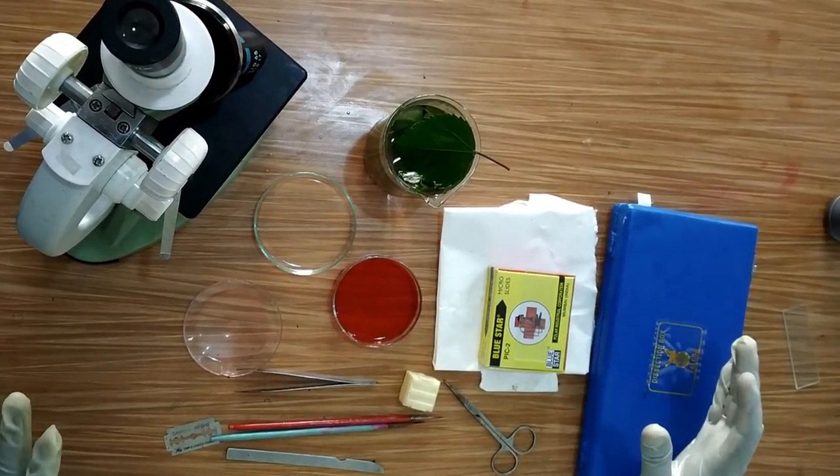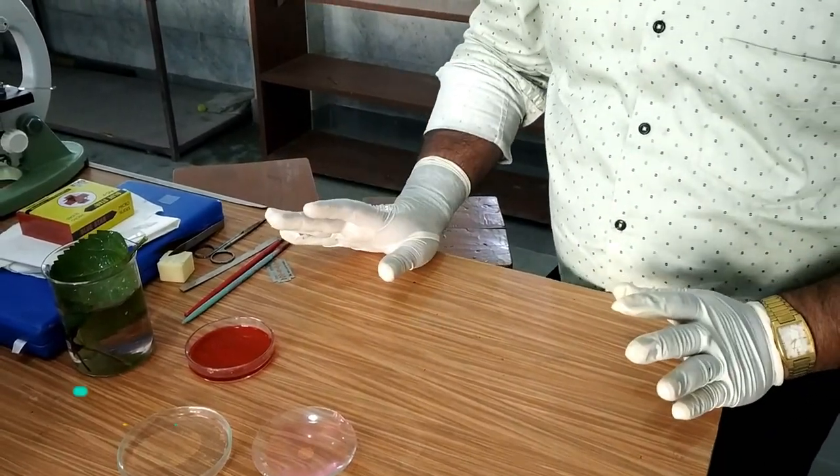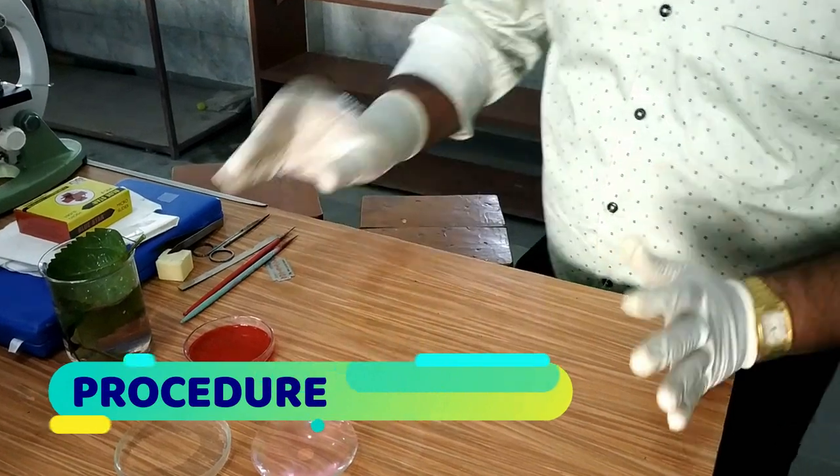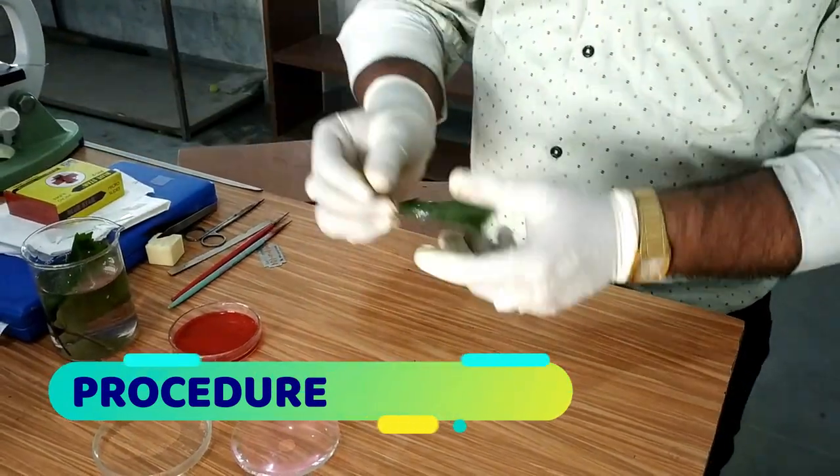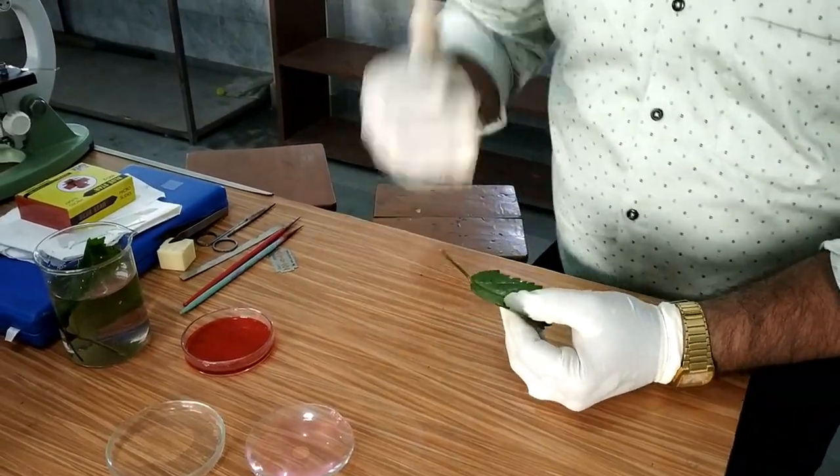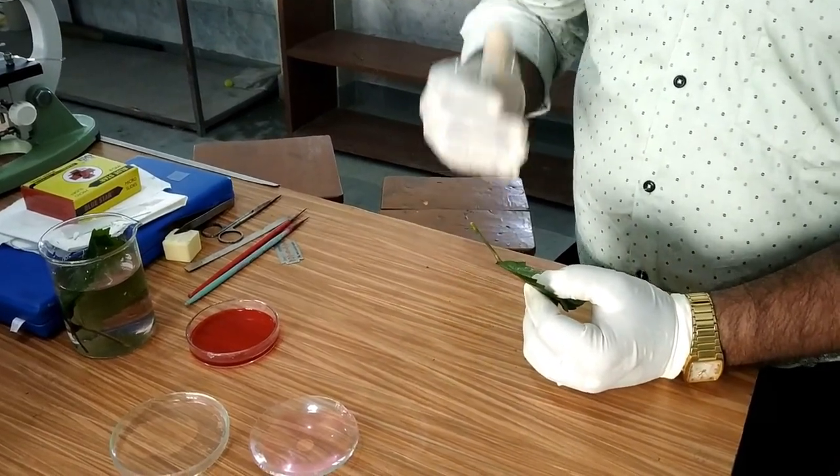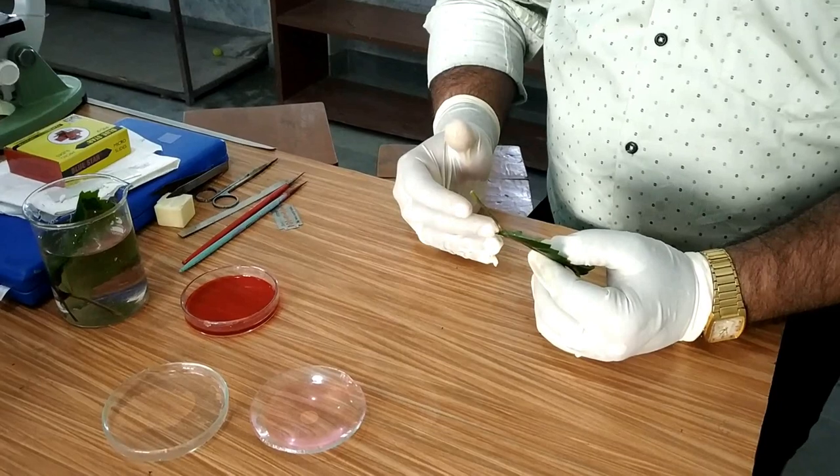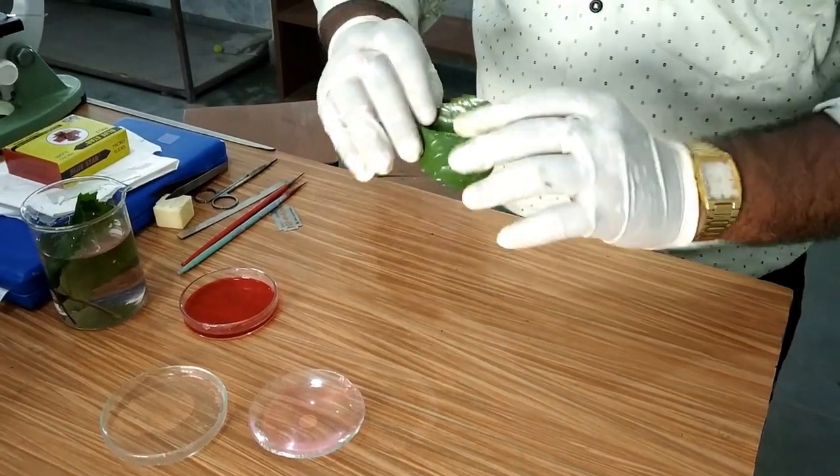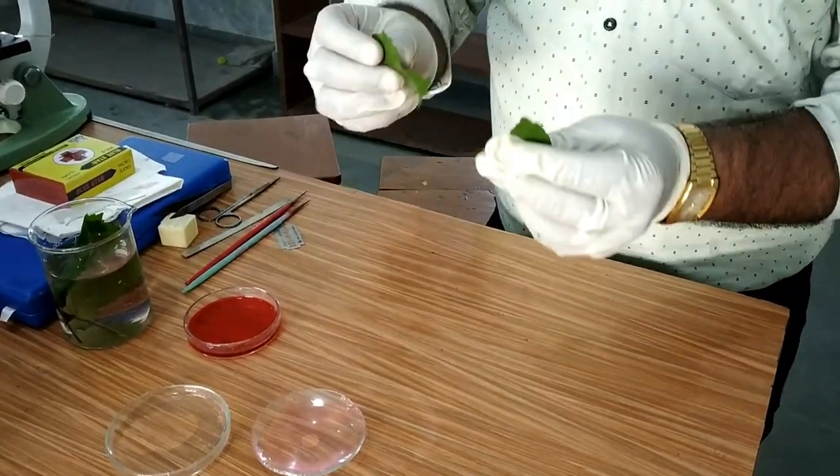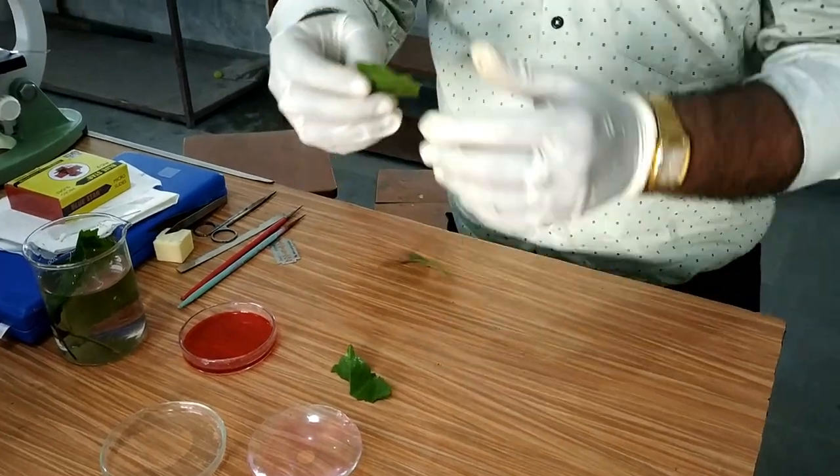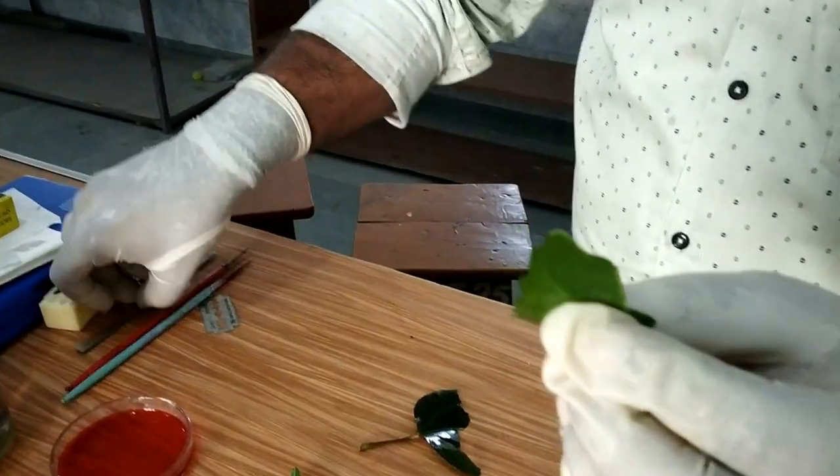We can perform this experiment by two methods. The first method: first of all, we need to take one leaf and then tear the leaf in the opposite direction of the vein formation. After tearing the leaf, here you can see I have got a transparent epidermal peel.